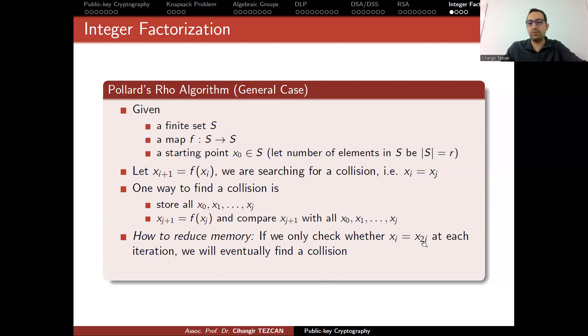So how to reduce memory? If you only check whether xi equals x2i at each iteration, we will eventually find a collision. This might be counterintuitive, but the idea is as follows. You start with x0, obtain x1, x2, x3, and if there is a collision, at some point one of these values should come back to it.